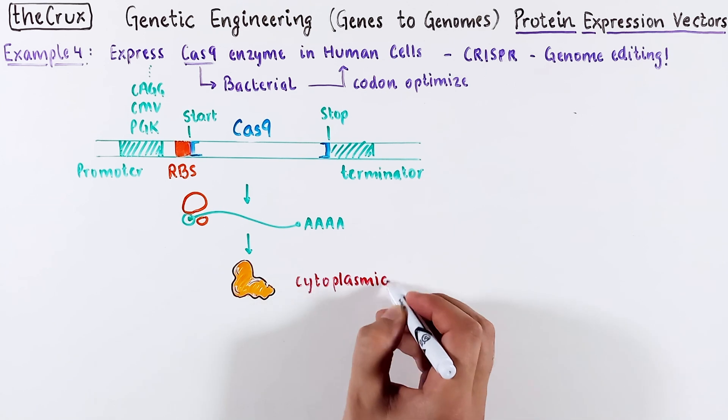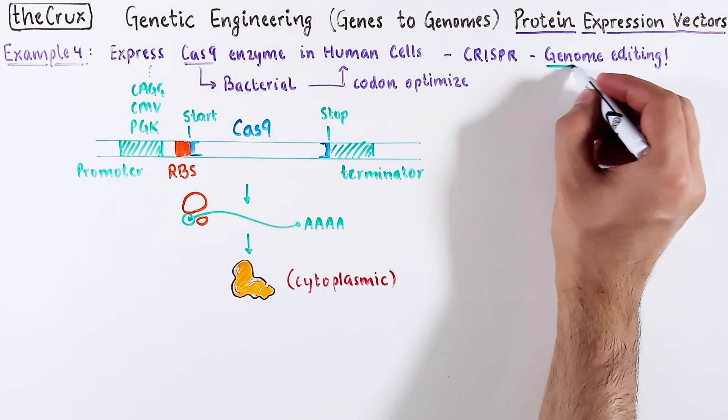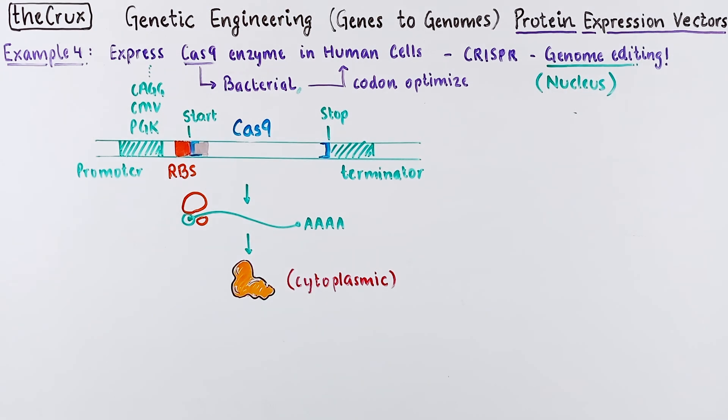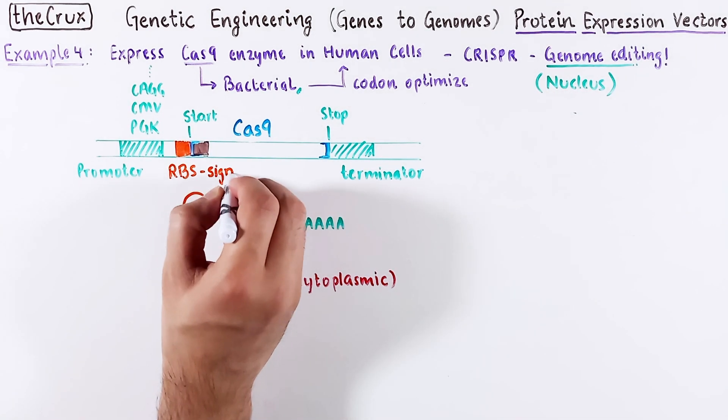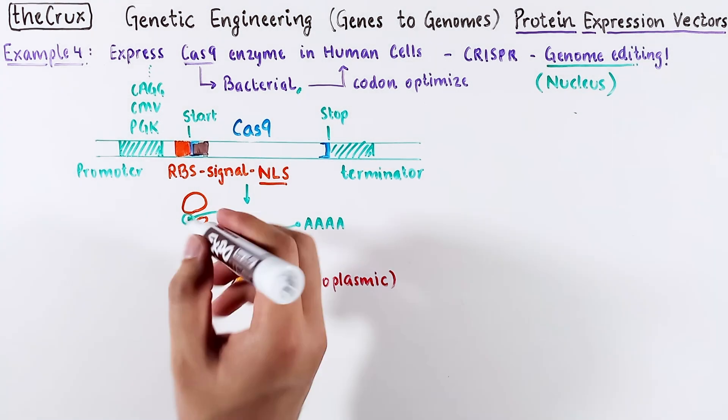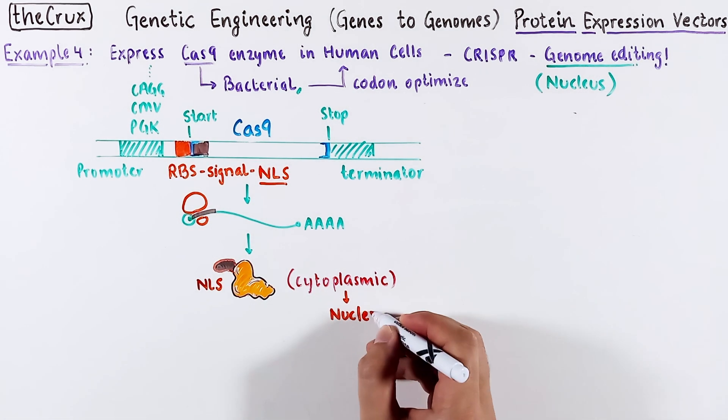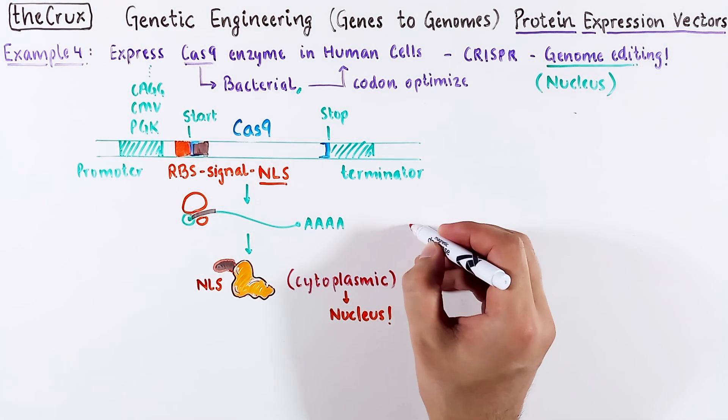By default, the Cas9 would be cytosolic. Our application is genome editing in humans. The genome is compartmentalized in the nucleus, which means the Cas9 ORF needs a signal, a nuclear localization signal so the protein is relocated to the nucleus after it is translated. Let's go a step further.